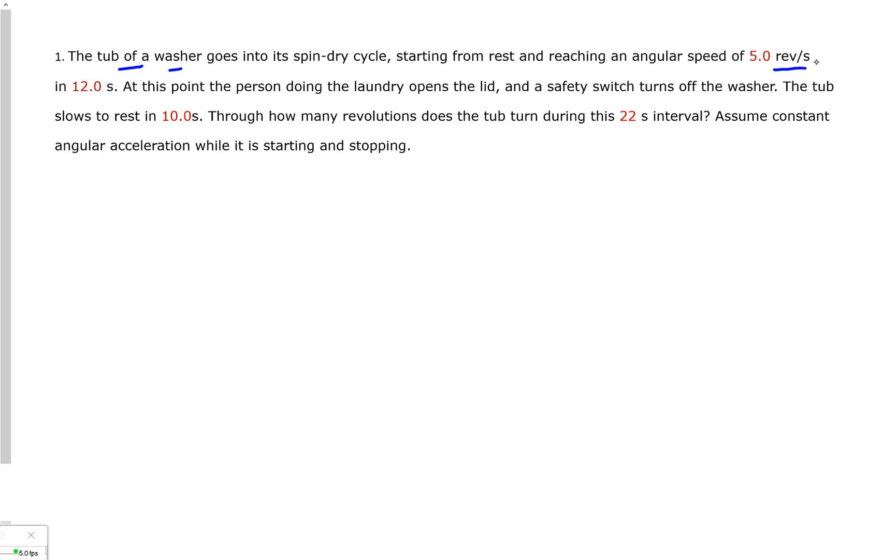So that's going to be our first thing we have to correct is that revs per second, and it's in 12 seconds. At this point, the person doing the laundry opens the lid, a safety switch turns off the washer, the tub slows to rest in 10 seconds. Through how many revolutions does the tub turn during this 22 second interval?